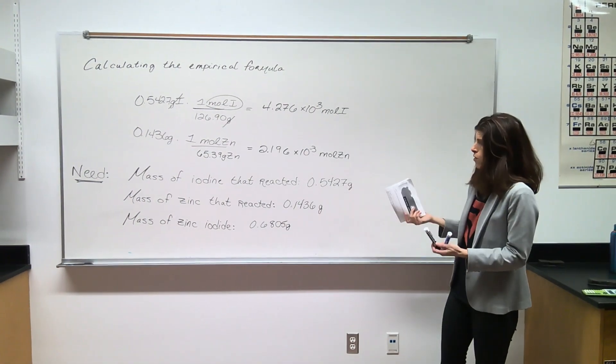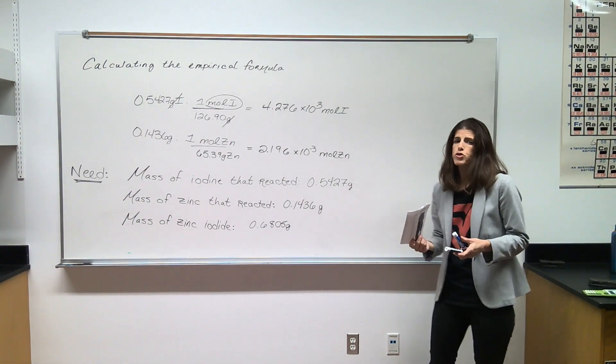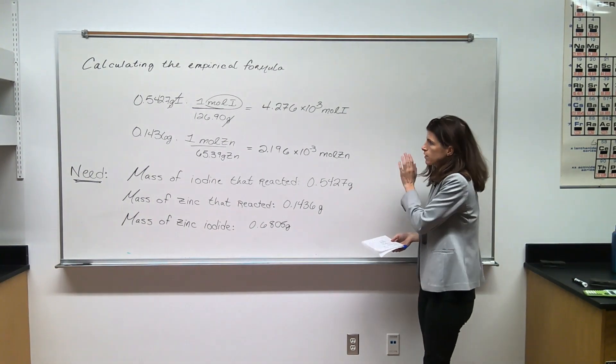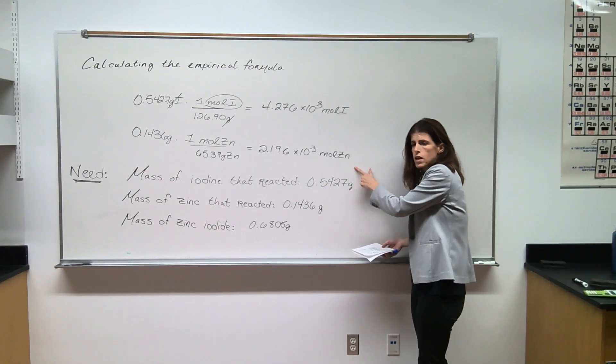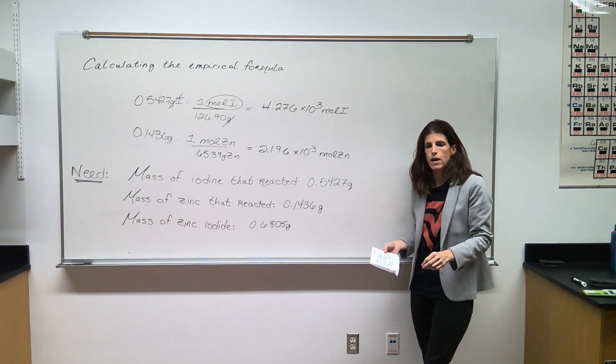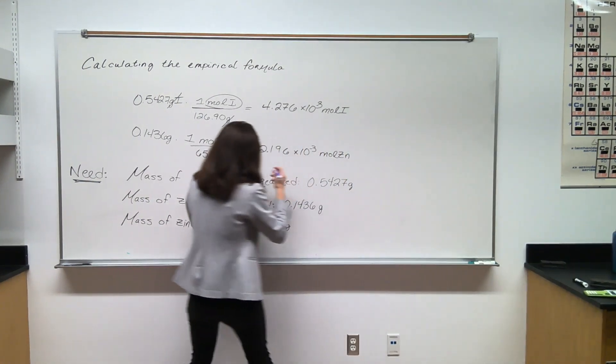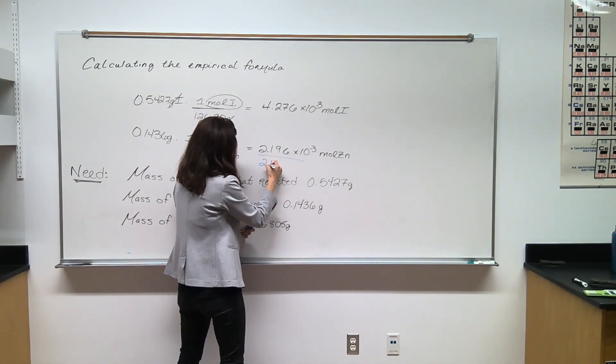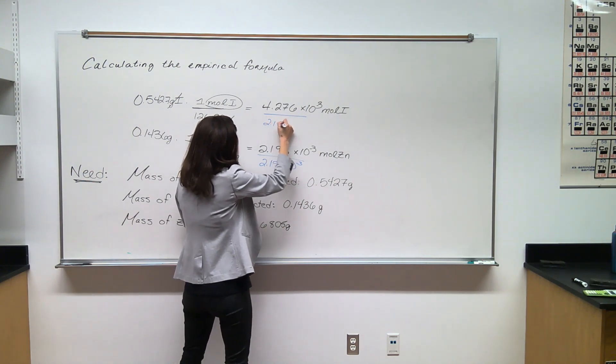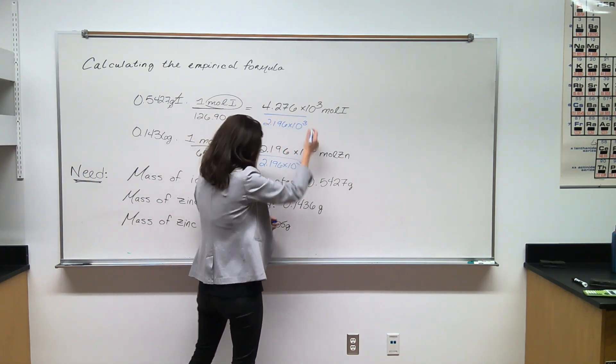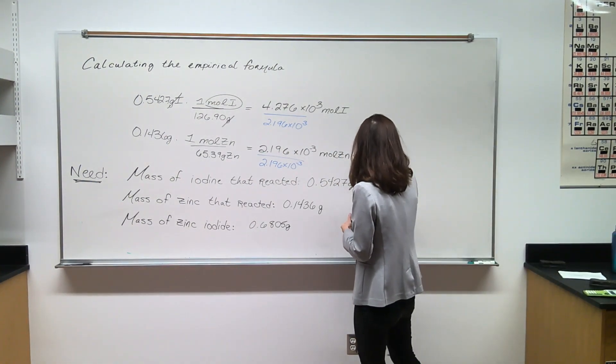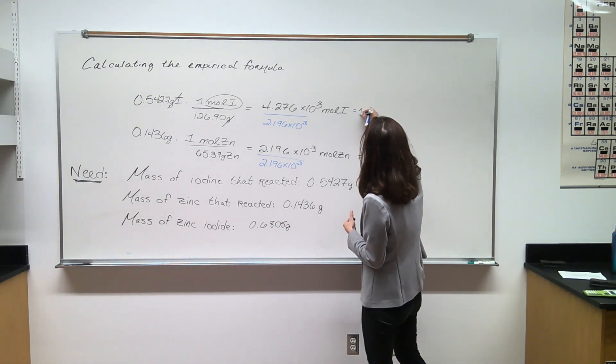To establish the formula, we need to figure out the mole to mole ratio. What we need to do here is find the smallest mole value. Looks like we have less moles of zinc compared to the moles of iodine. Then we're going to divide all of the mole values by that smallest mole value. Any number divided by itself is 1, and over here I get 1.947.